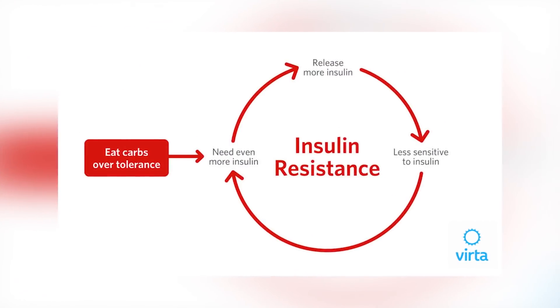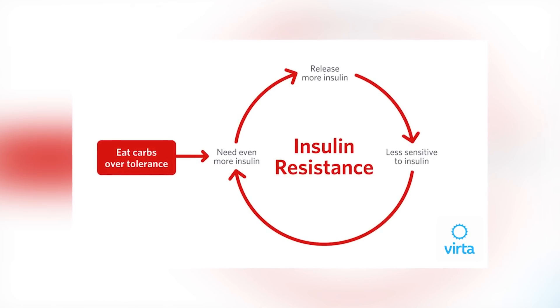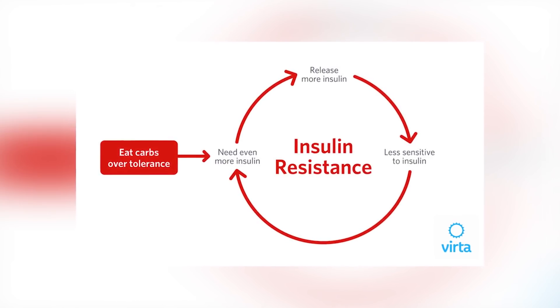Number three: reduce carbs. If you want to take this one step further and see faster results, reducing carbs entirely is the way to do it, because carbohydrates are the macronutrient that raises insulin the most — much more so than fat or protein. If you can limit your total carbohydrates for the day to 100 grams or even 50 grams, you are going to be significantly reducing your insulin load.